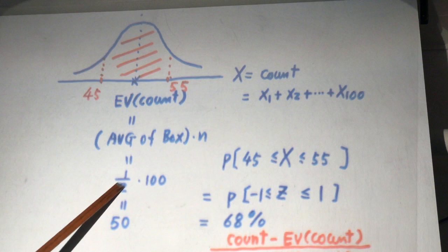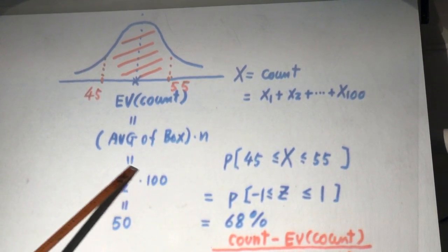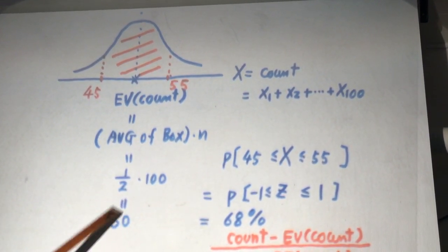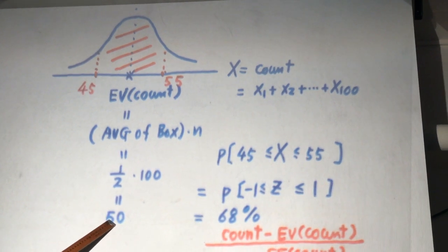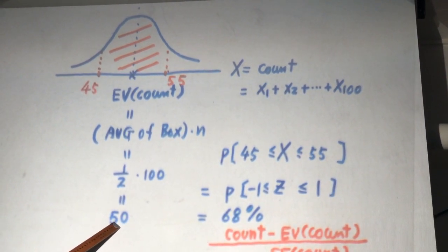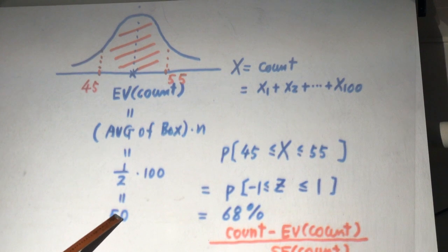Average of the box is one half. Number of draws is 100. So one half times 100, this gives 50. When you flip a fair coin 100 times, we expect to see 50 heads. That makes sense.